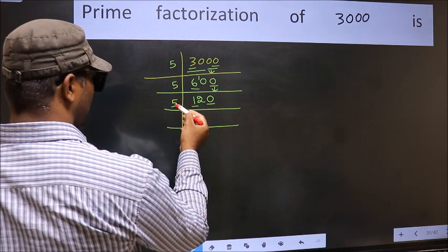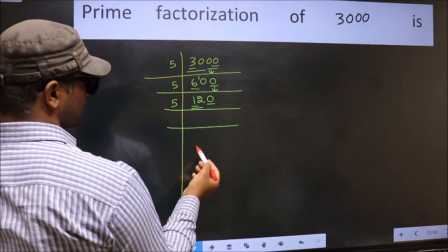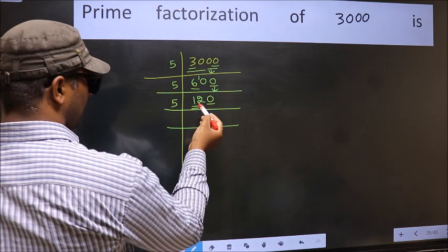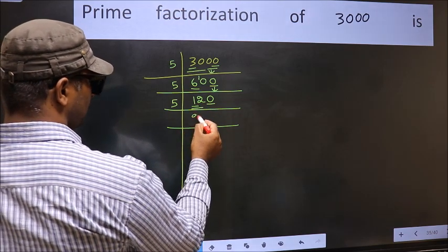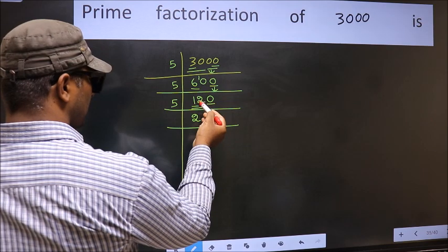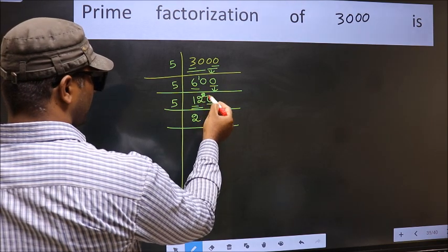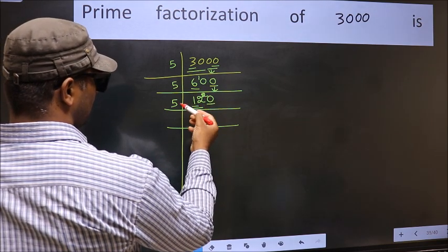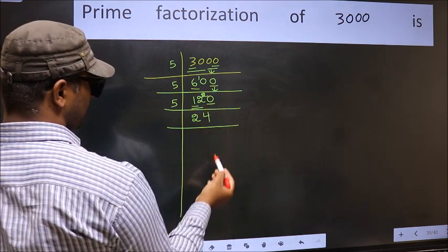Now the last digit is 0, so take 5. First number 1 is smaller than 5, so take 2 numbers: 12. A number close to 12 in the 5 table is 5, 2 is 10. 12 minus 10 is 2, carried forward 20. When do we get 20 in the 5 table? 5, 4 is 20.